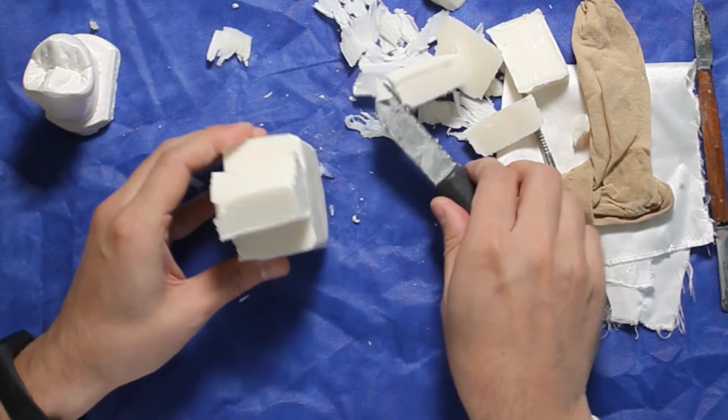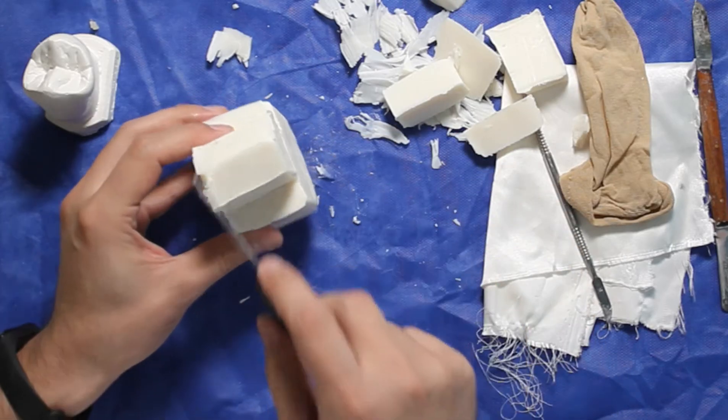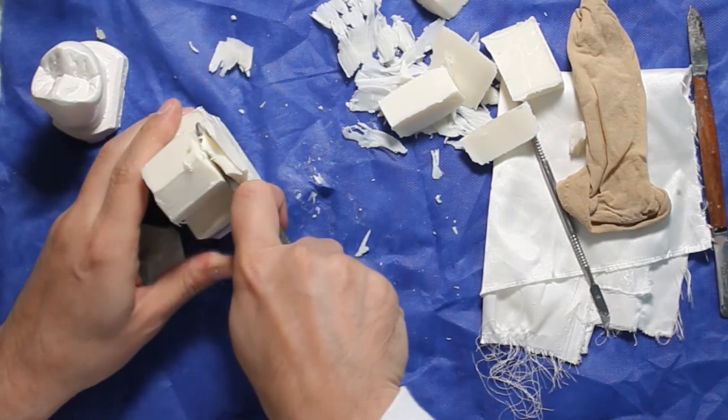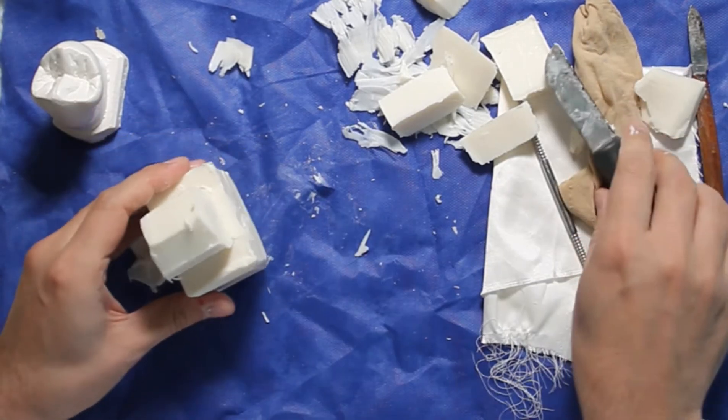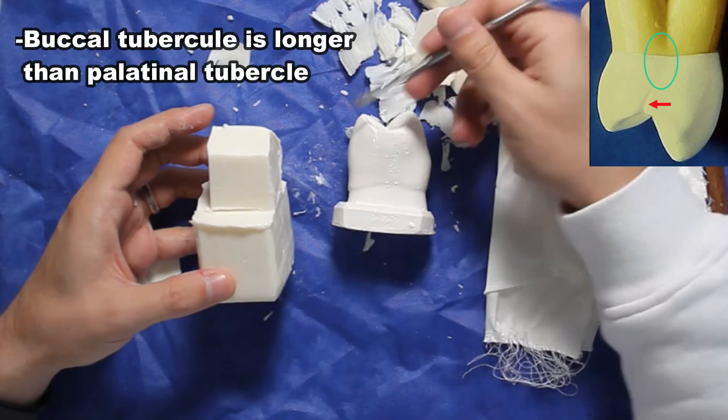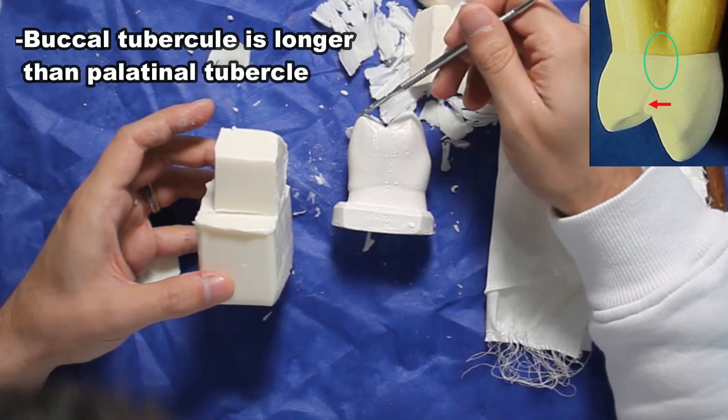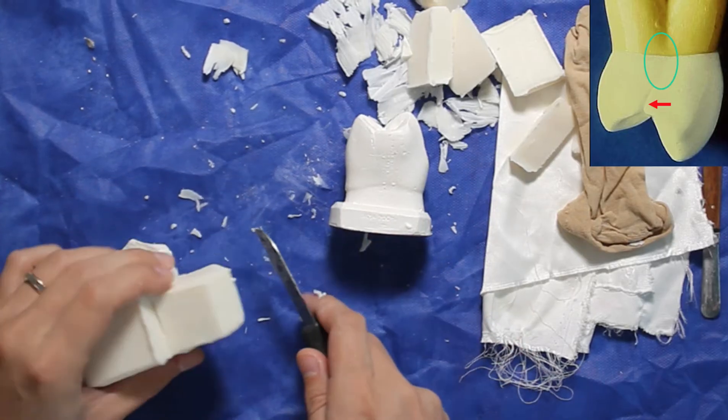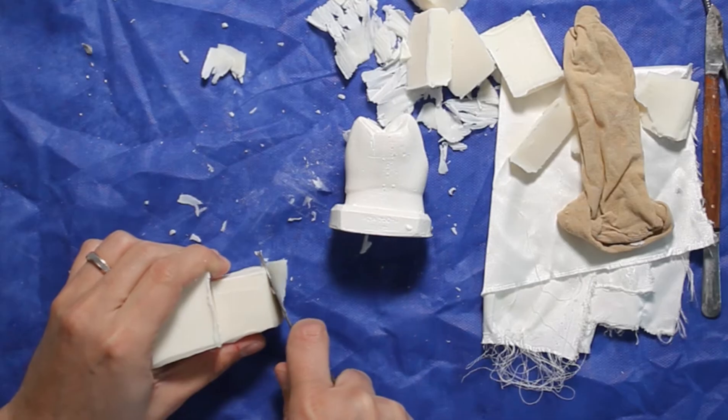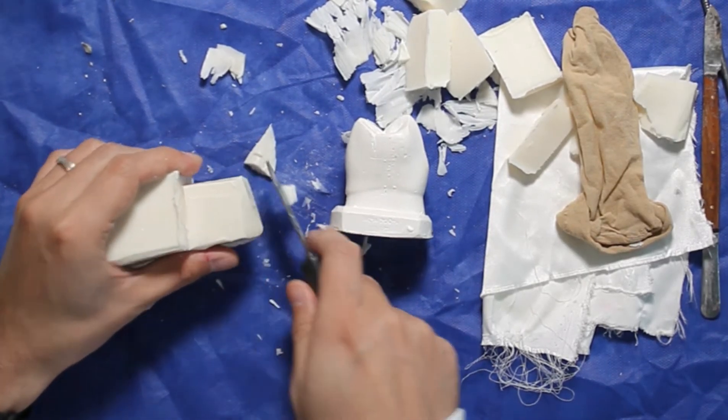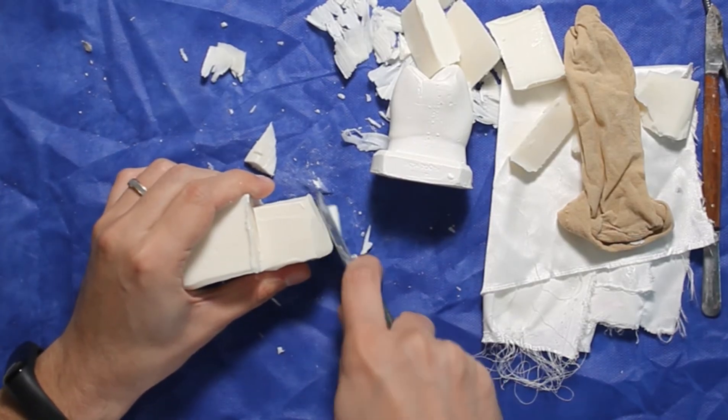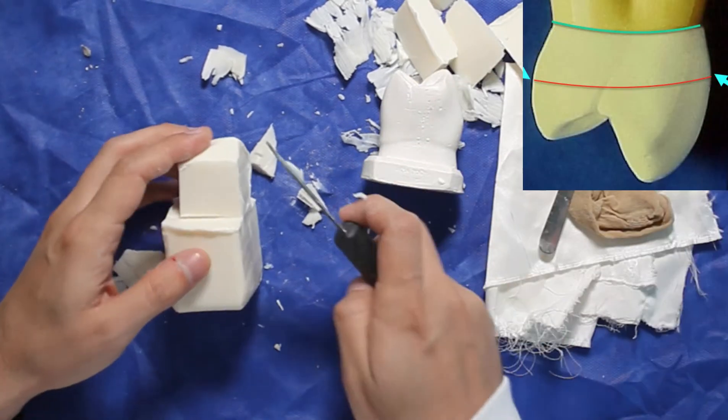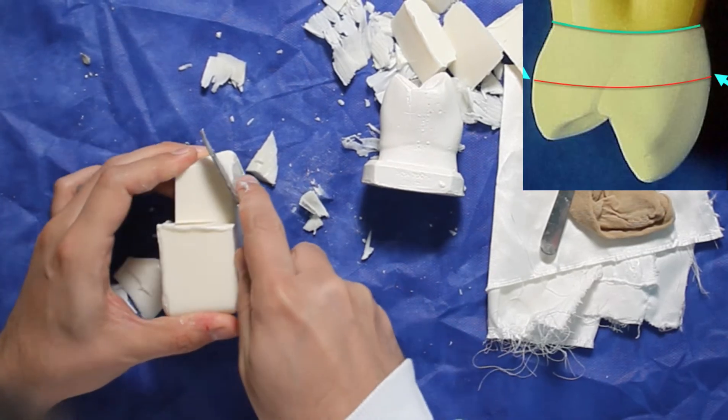We can say palatinal or lingual for the upper teeth. Buccopalatinal thickness will be same with the crown length, so we will cut the external part. Buccal tubercle is longer than palatinal tubercle here, but on the model the difference is less. We will carve a little more. Now we will cut palatinal side. You can cut like this, and we will round the corners later. Now like the canine, after one-third cervical we will cut this line.